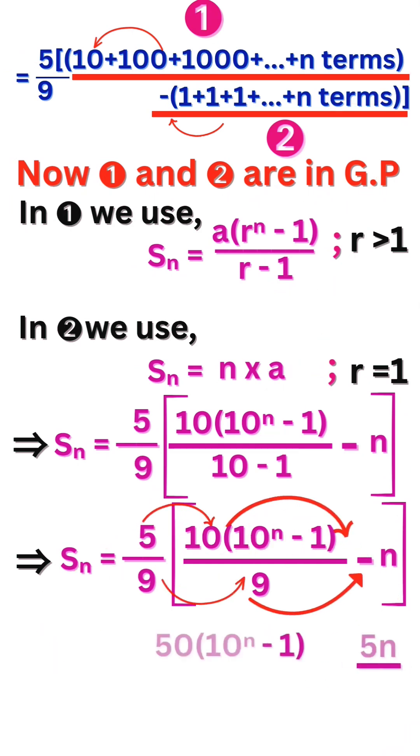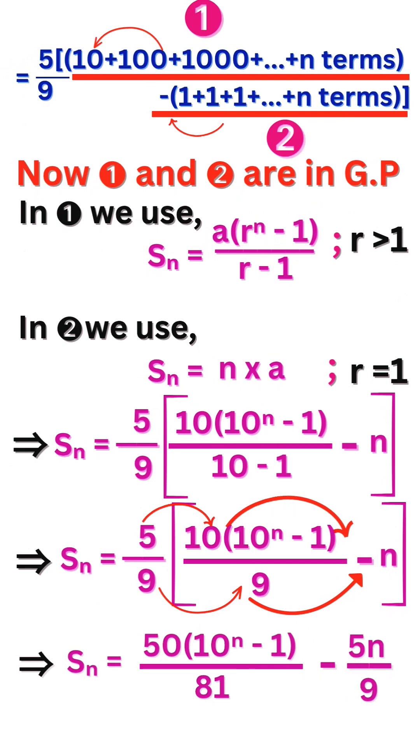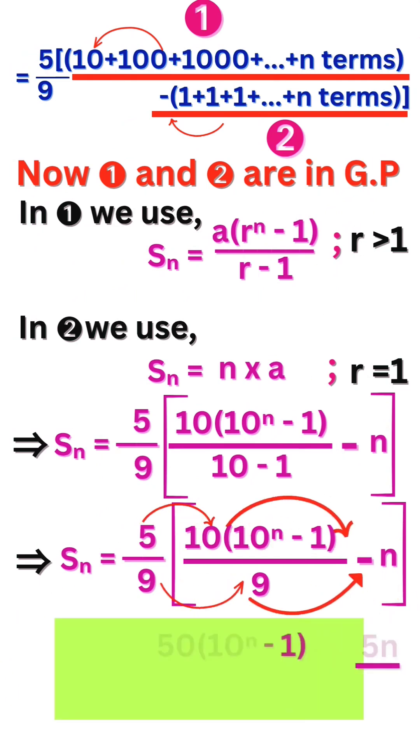Finally, the 5 in numerator enters into bracket terms. Also 9 in denominator enters into bracket terms. We get 50 into 10 power n minus 1 divided by 81 minus 5n by 9. This is our required answer.